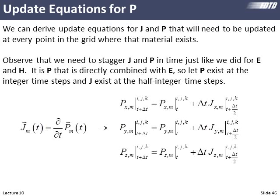For the update equations: P is defined at integer time steps (same as E fields) and J is at half time steps (same as H fields). Approximating the derivative with a finite difference and solving for the future value of P gives three update equations for polarization for the mth resonance. If modeling a dispersive material with 10 resonances, for every point in the grid with that material we update x, y, and z components of polarization for each resonance.